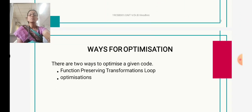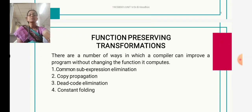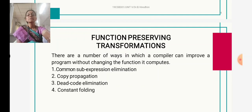There are two ways of optimization: one is function-preserving transformation, and the other is loop optimization. Function-preserving transformation means there are a number of ways in which the compiler can improve the program without changing the function it computes — without changing the meaning or computations of the functions. The types of function-preserving transformations are: common sub-expression elimination, copy propagation, dead code elimination, and constant folding.